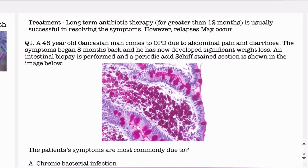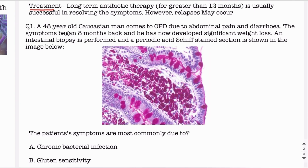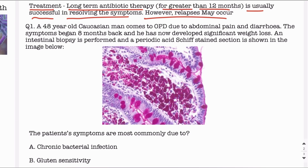The treatment of the disease is long-term antibiotic therapy for greater than 12 months. This therapy is usually successful in resolving the symptoms, however relapses may occur. Because this is a chronic infection with bacteria living inside macrophages, a very long-term antibiotic course is needed to kill all the bacteria and resolve the symptoms.